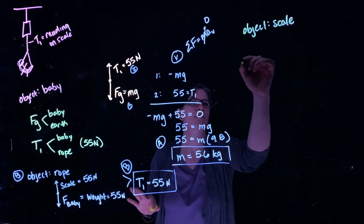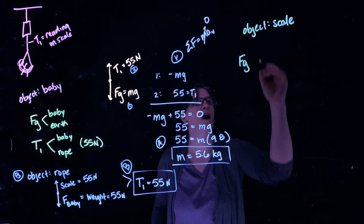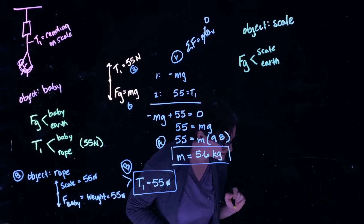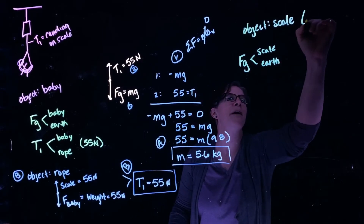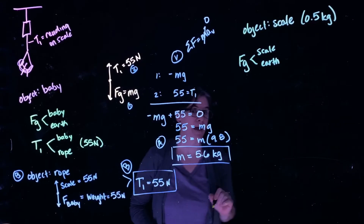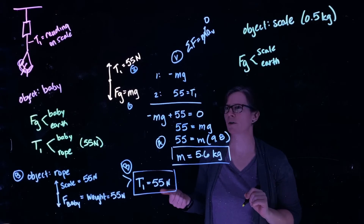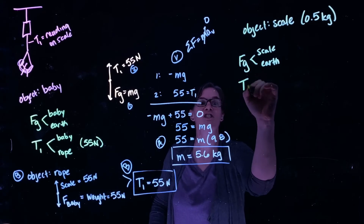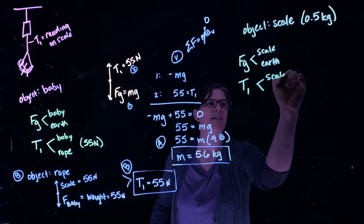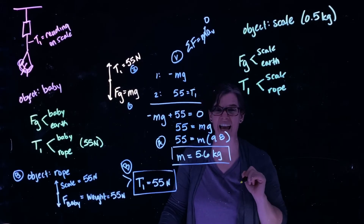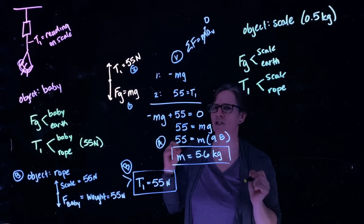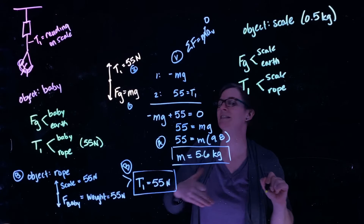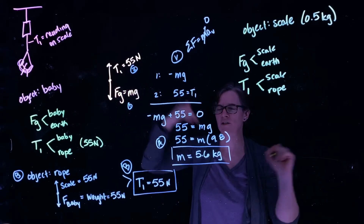Let's think about what forces are acting on that scale. We know the scale is interacting with the Earth—its mass is given as 0.5 kilograms, so half a kilogram. The scale is also interacting with the rope below it, so tension T1 is between the scale and the rope attached to the baby. Note the scale is not interacting directly with the baby—the rope is touching the baby.